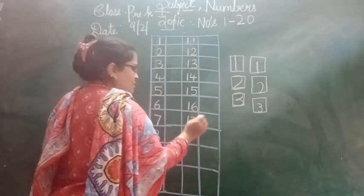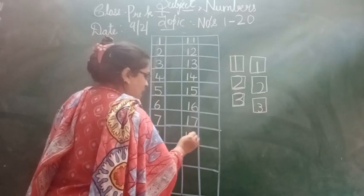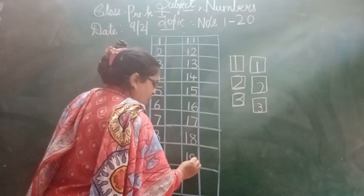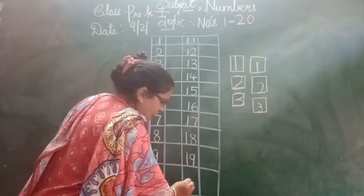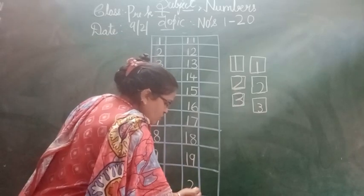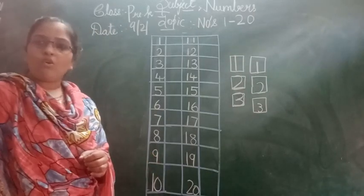1, 7, 17. 1, 8, 18. 1, 9, 19. And here children, 2, 0, 20. Okay children.